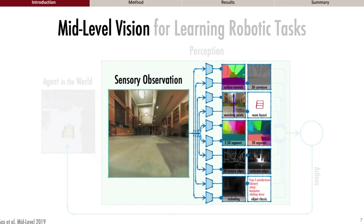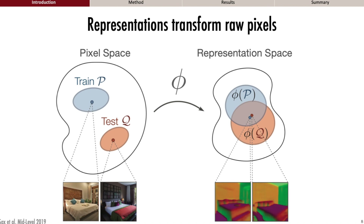Before we get into the details of learning active tasks using mid-level features, let's discuss why they could possibly be helpful for generalization and sample efficiency. Effectively, these features warp the input space. When you're in raw input space, the train and test samples might not overlap if they look different, while what a feature does is warp the input so that these regions might now overlap. So when your agent sees the world through this warping lens — i.e., an abstraction — it might have a higher chance of generalizing, as it benefits from useful invariances supplied to it as priors.